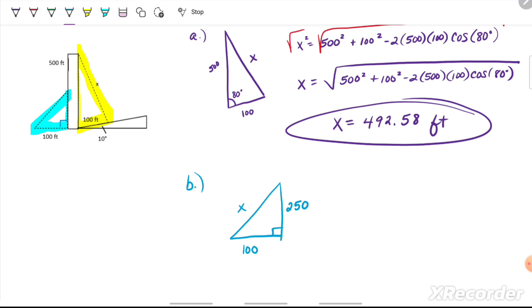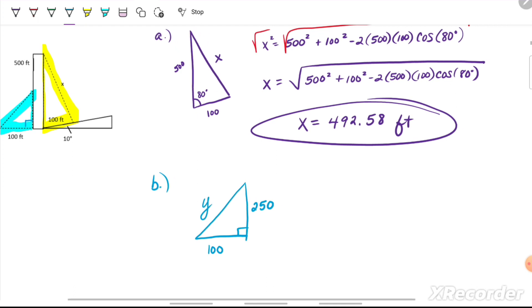Since we have a right triangle here, both SOHCAHTOA and Pythagorean theorem apply. So we don't even need trigonometry to find this one. We're just going to use Pythagorean theorem. I'm going to change my variable to y just so we don't confuse it with the x in part A. All right, so our hypotenuse squared is equal to 100 squared plus 250 squared.